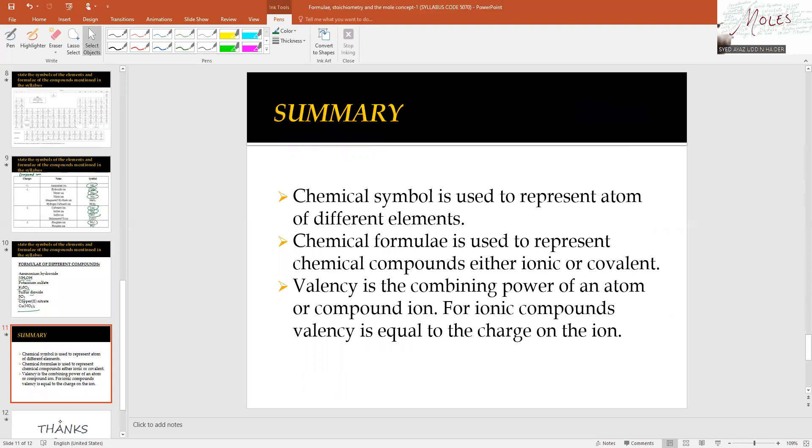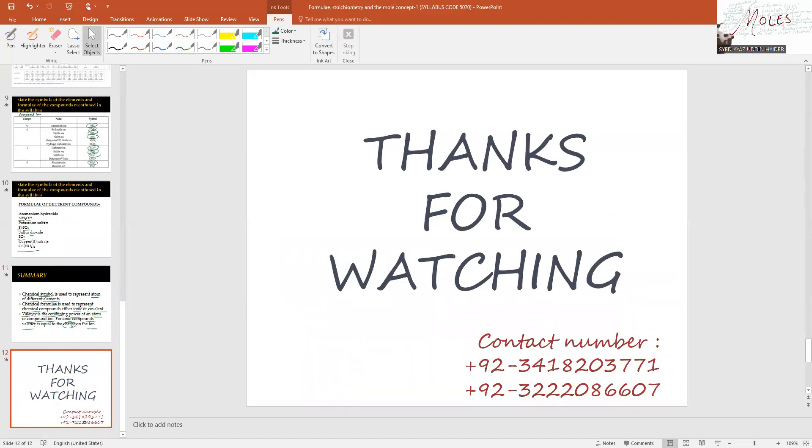Summary of today's lesson: Chemical symbol is used to represent atoms of different elements. Chemical formula is used to represent chemical compounds, either ionic or covalent. Valency is the combining power of an atom or compound ion. For ionic compounds, valency is equal to the charge on the ion.